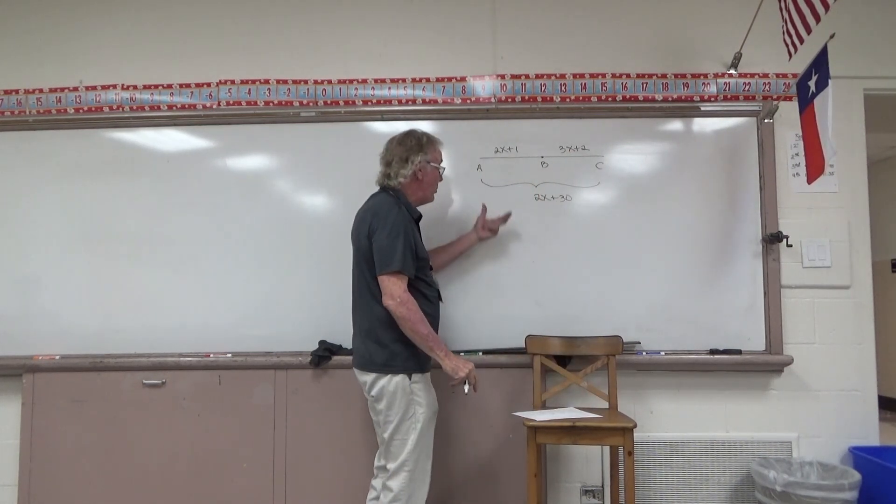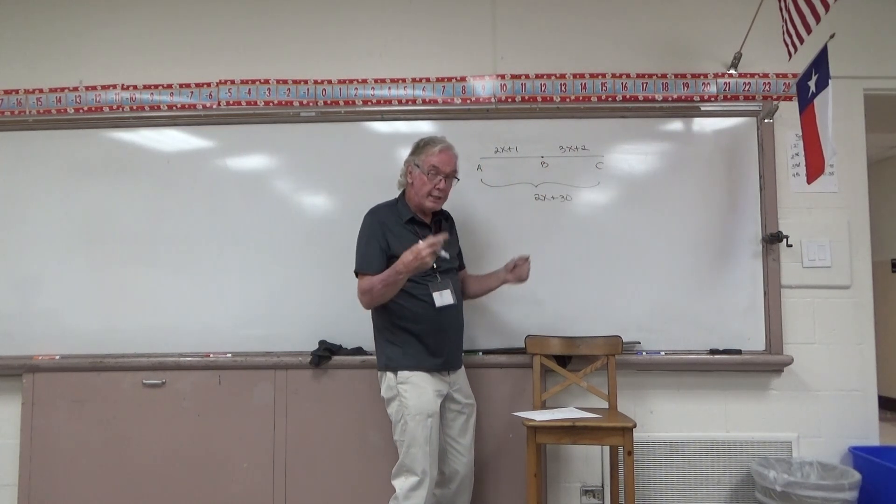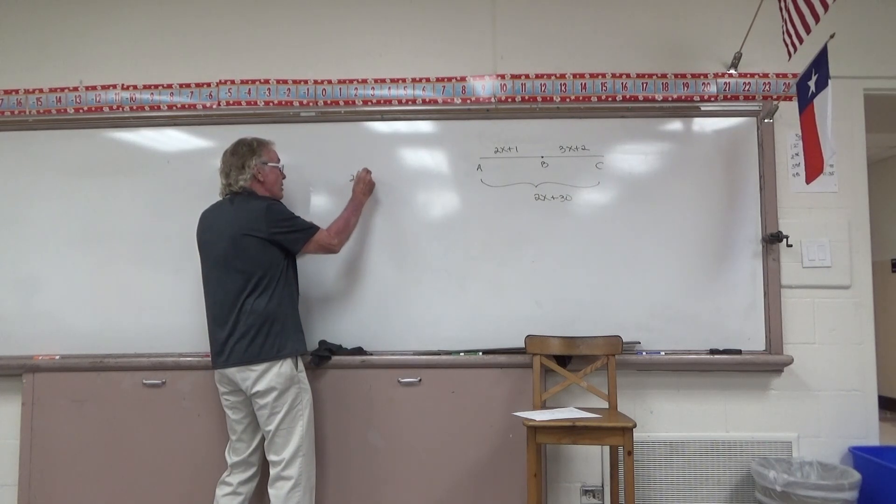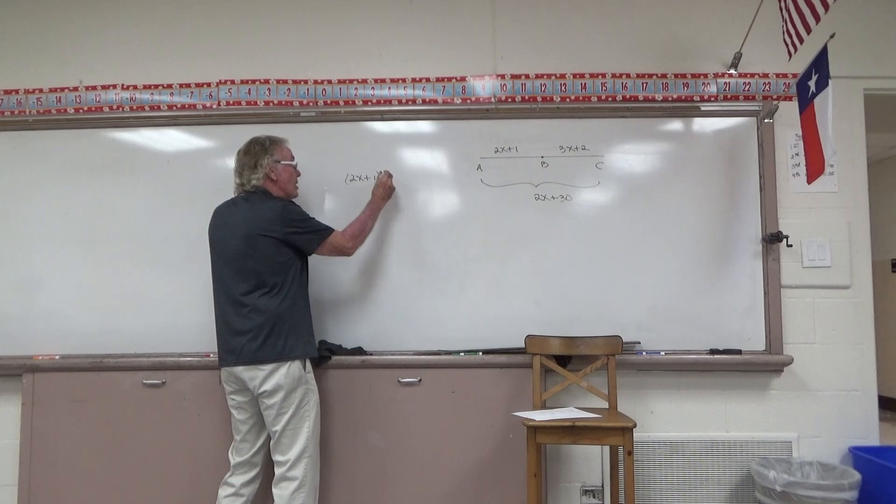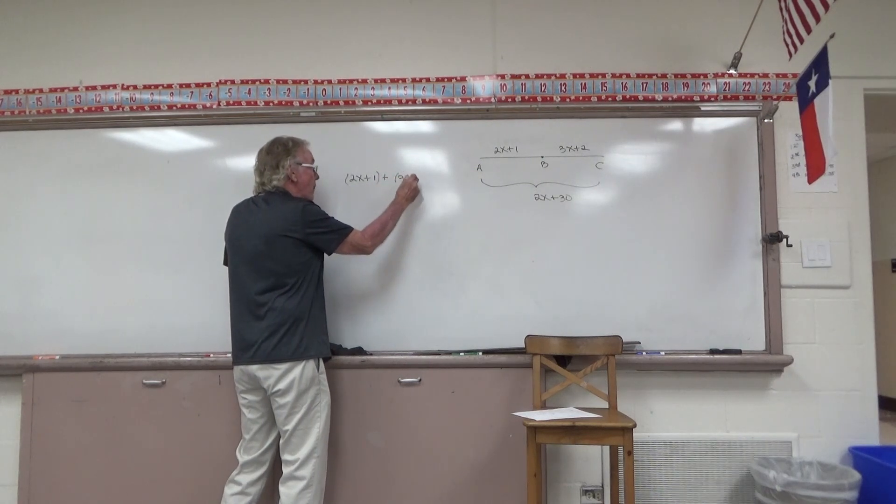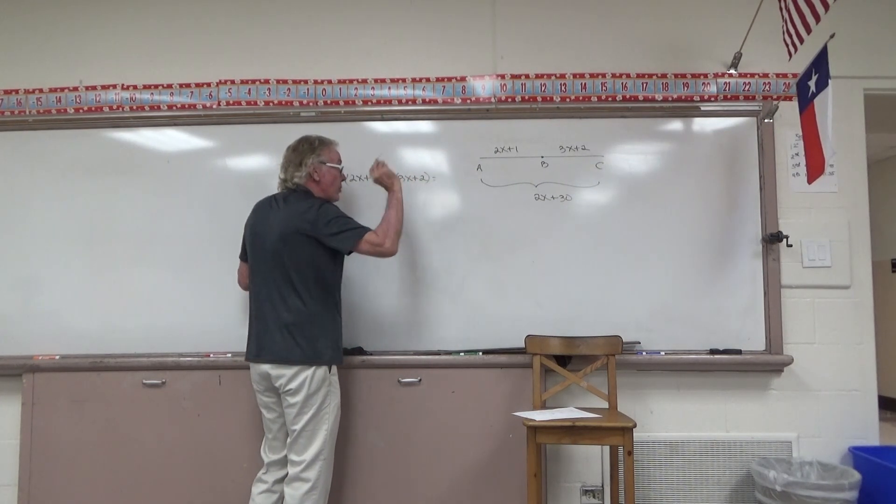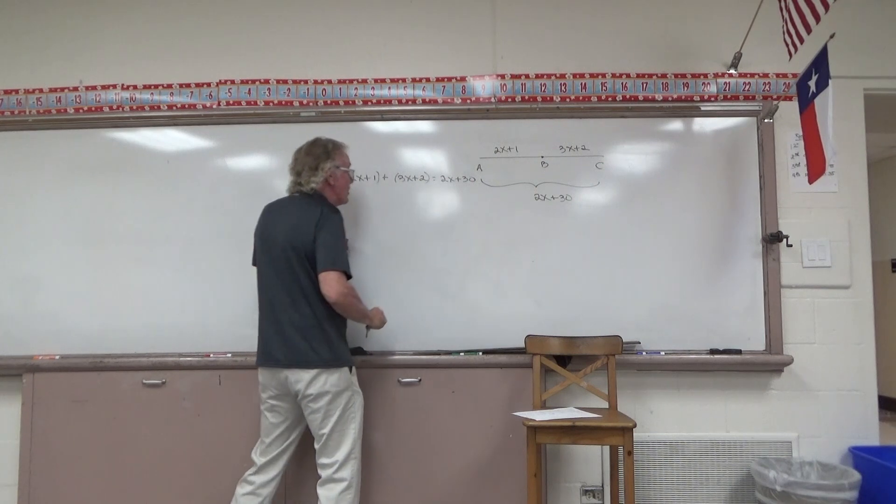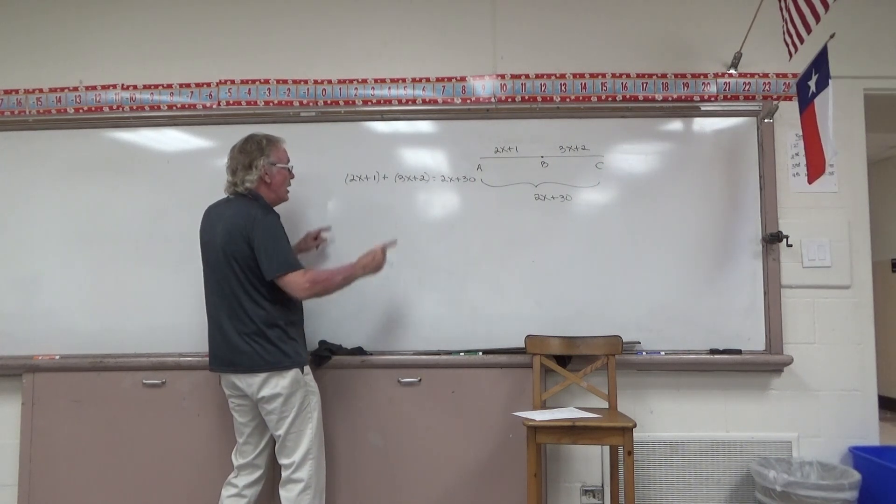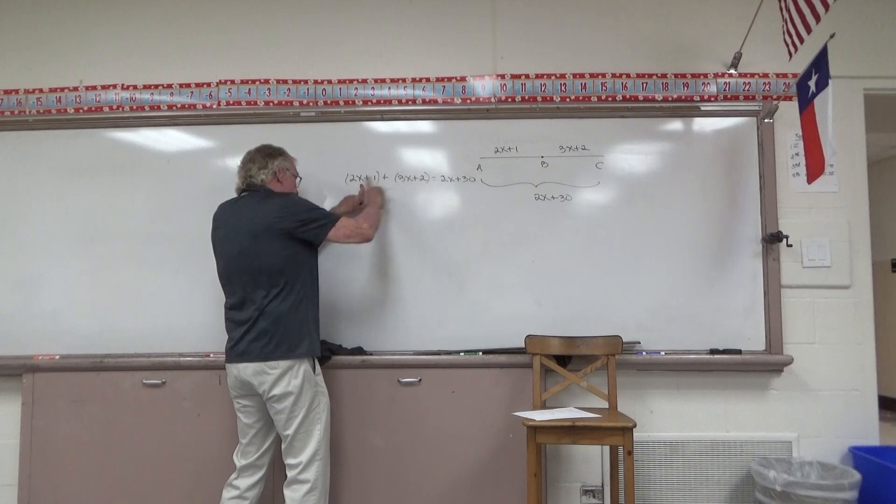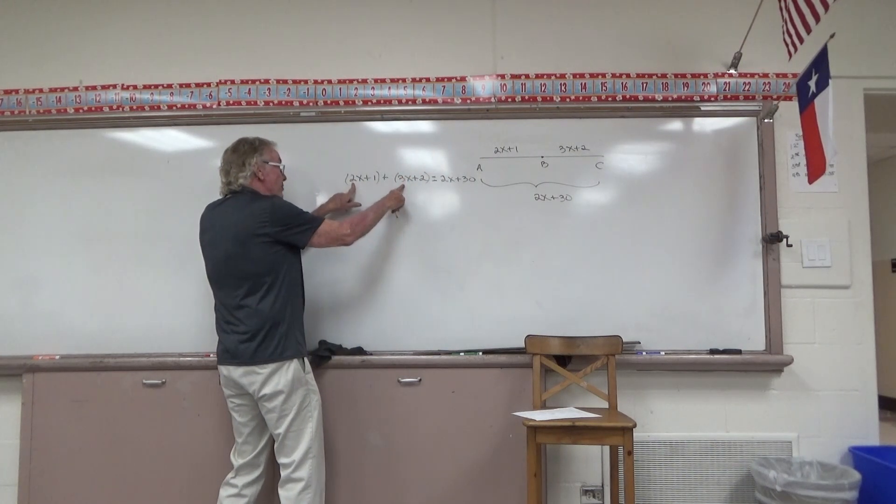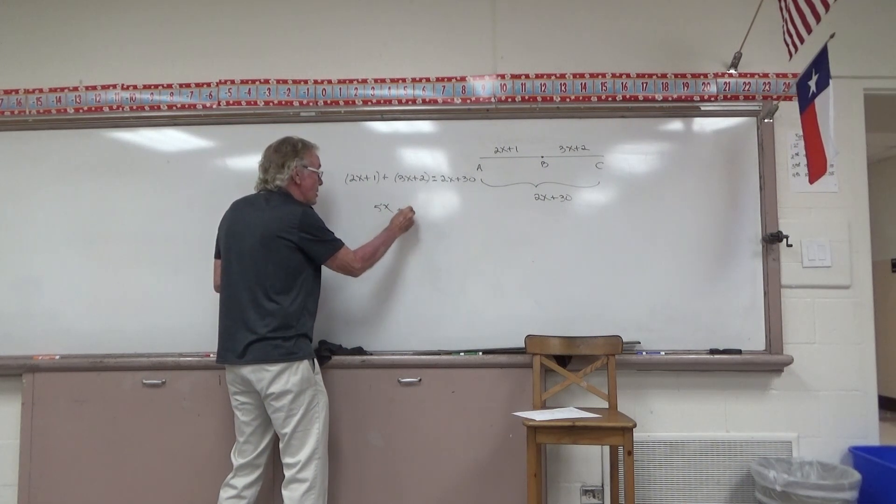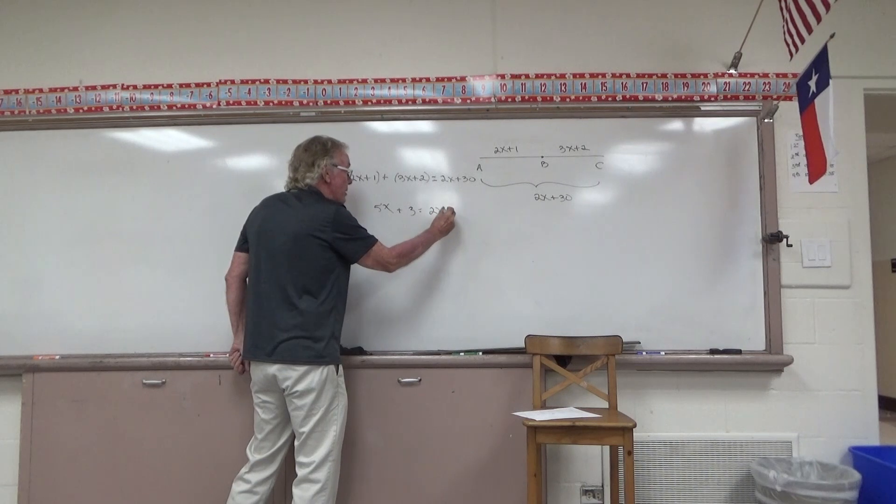Again, we're aware that these two smaller lengths must add up to the full length, but it's a little bit more interesting equation. Still workable. 2X plus 1 plus 3X plus 2. Let's do the full length, 2X plus 30. I'll gather like terms on the left-hand member, everything left of this equal sign. That would give me 5X plus 3 is equal to 2X plus 30.